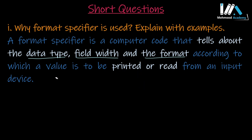In summary, a format specifier is a computer code which tells us three things: data type (such as %d, %f), field width (how many spaces), and format (how the value is combined with text or strings). It is used when you print a value on the screen or read it from the screen.